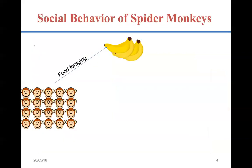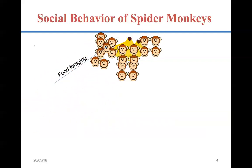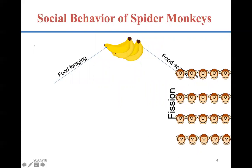Let me explain what fission-fusion social structure means. Suppose this is a group of monkeys. Initially they start food foraging and suppose they found food here — these bananas are the food source. After some time, think of a situation where they start facing food scarcity in that particular area because the number of monkeys is too many and the availability of food is less. So the common sense they follow is that they divide themselves into smaller groups. This process is called the fission.